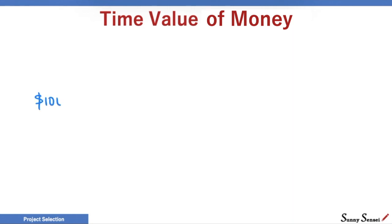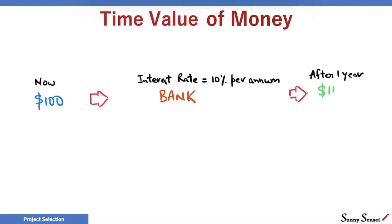I have $100. I put the money in a bank. The bank offers me an interest rate of 10% per annum. Per annum means annual or the yearly rate of return. What happens after one year? The $100 becomes $110. How?